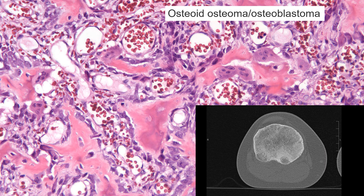Differential diagnosis number two is an osteoid osteoma and osteoblastoma — other bone-forming tumors. As discussed earlier, both of those lesions show fairly brisk osteoblastic rimming and scattered osteoclasts. Most importantly, don't forget: both these lesions are either intracortical or intramedullary. An osteoma, by definition, is a surface lesion. That's the key distinguishing feature.